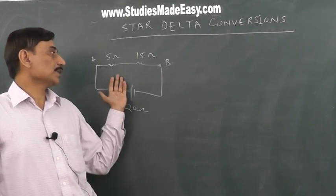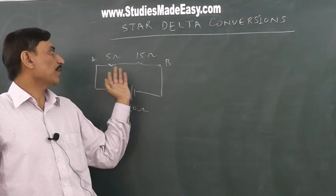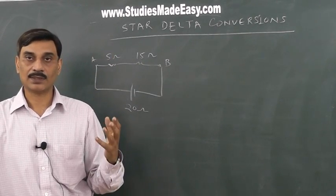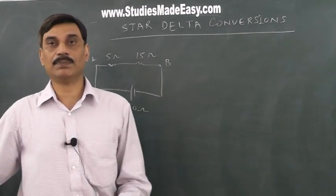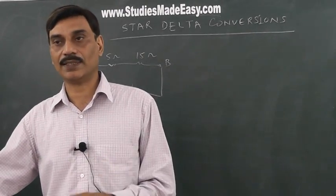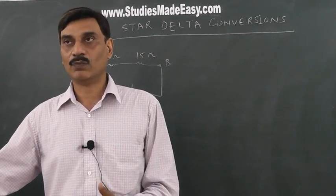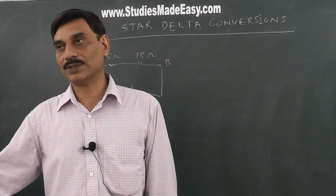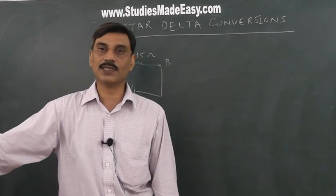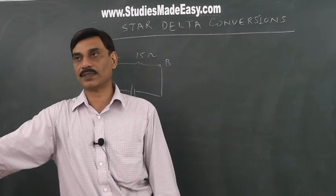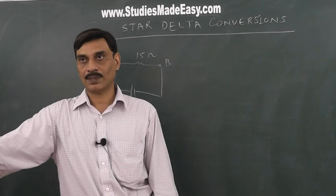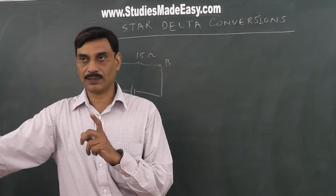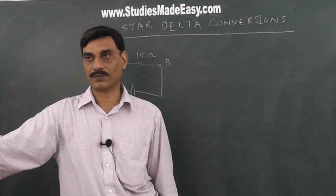The equivalent resistance in series is 5 plus 15, that is 20 ohm. The basic essence of defining equivalent resistance — be it series or parallel — is that single resistance which draws the same current as being drawn by the combination of resistors from the same battery. R equals R1 plus R2 is the formula when they are in series.